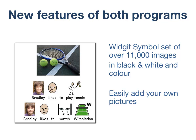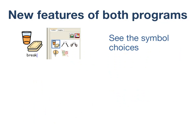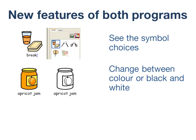In either of them, you can very easily add your own pictures or photographs. They share a number of significant other advantages. Instead of pressing a key to scroll through the symbols in the document, you can see the alternatives displayed in the Symbol Viewer and just click on the one you want. You can change between colour or black and white at the touch of a button, either for the whole document or for individual symbols, and you can also colour individual symbols to your own requirements.